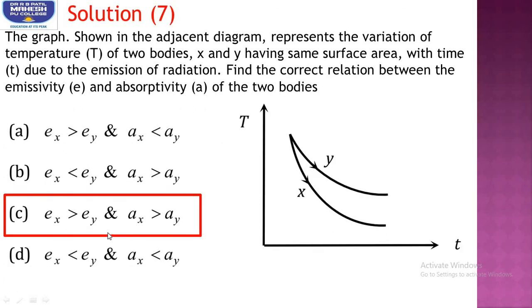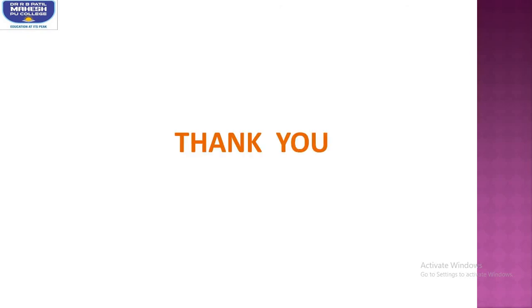The answer can be written as: emissivity of X is greater than emissivity of Y, and absorptivity of X is greater than absorptivity of Y. Thank you, students. I hope we will study some more questions in the next classes, and I hope you will practice many more problems on this topic.